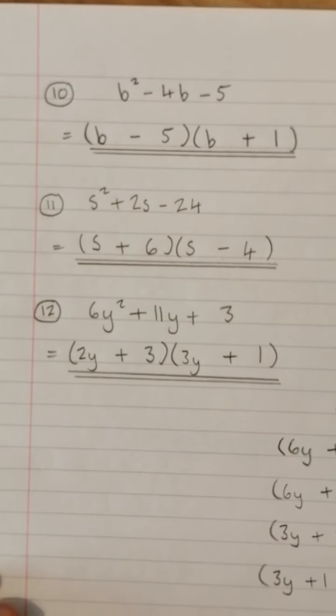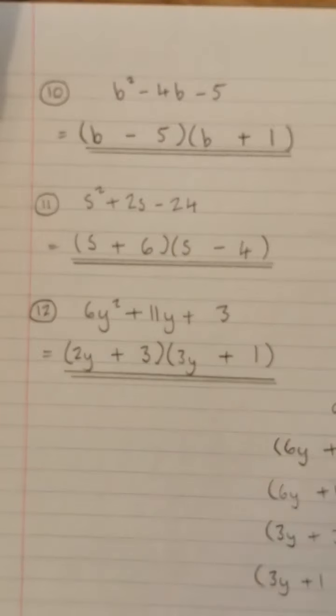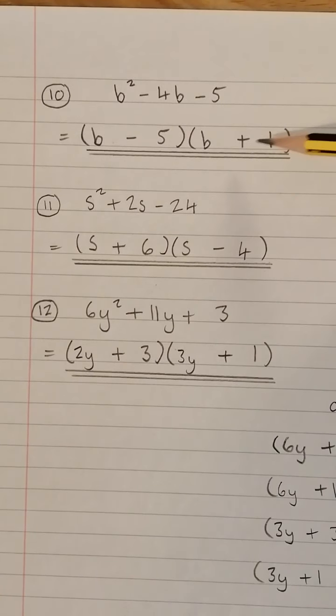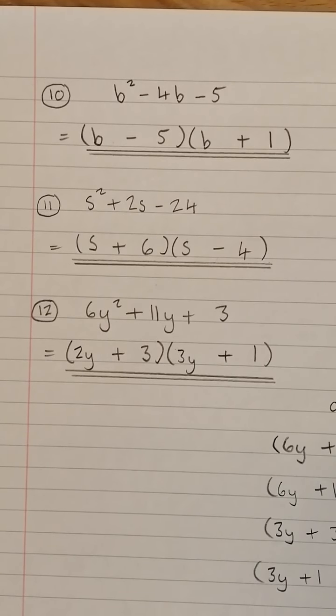Let's have a look at question 10, B² - 4B - 5. So numbers have to multiply to give -5, but add to give -4. -5 times +1 gives -5. -5 add 1 gives -4. So that's that one there, (B - 5) times (B + 1).